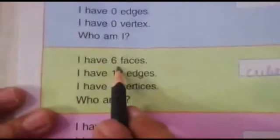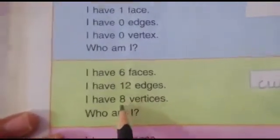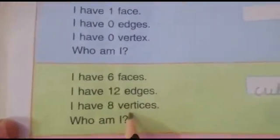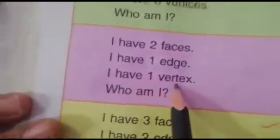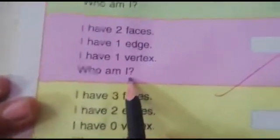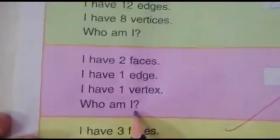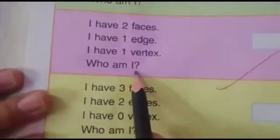Cube and cuboid have six faces, twelve edges, and eight vertices. Next one: I have two faces, I have one edge, I have one vertex. Who am I? Socho liya? Tell me the name.